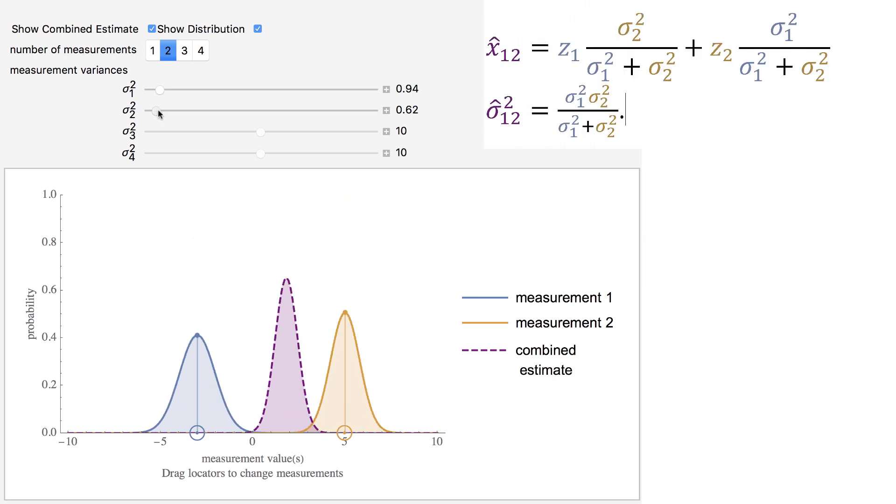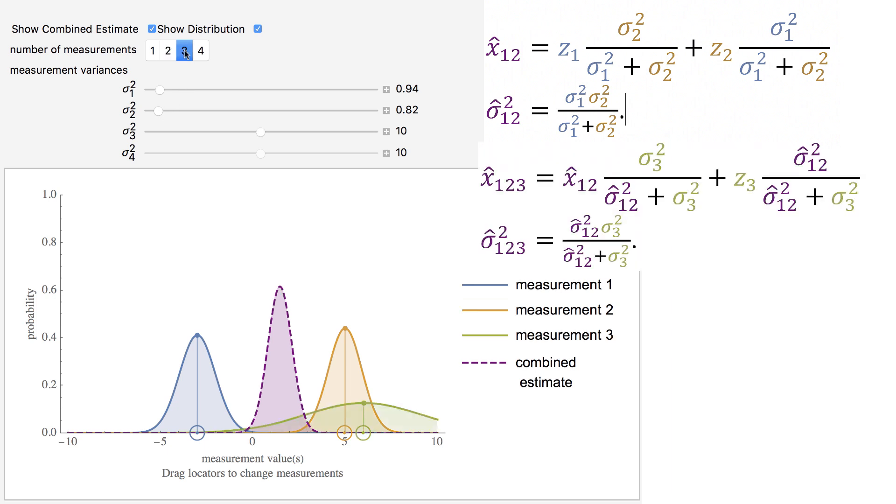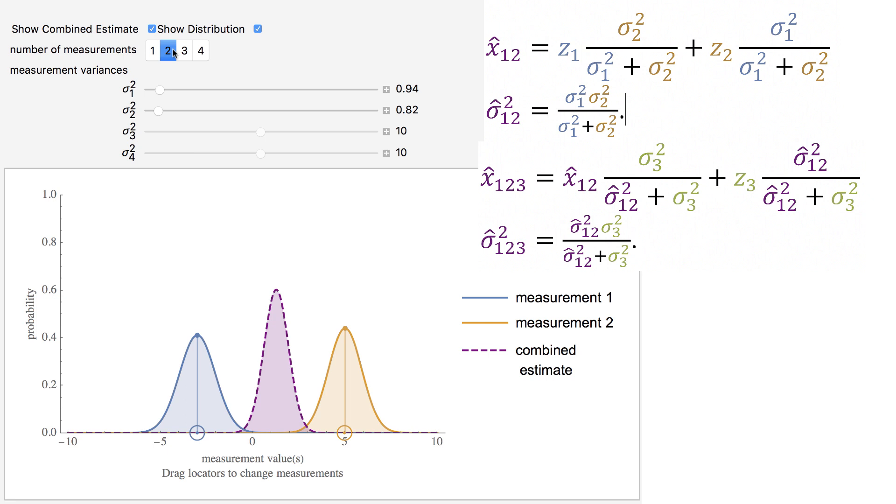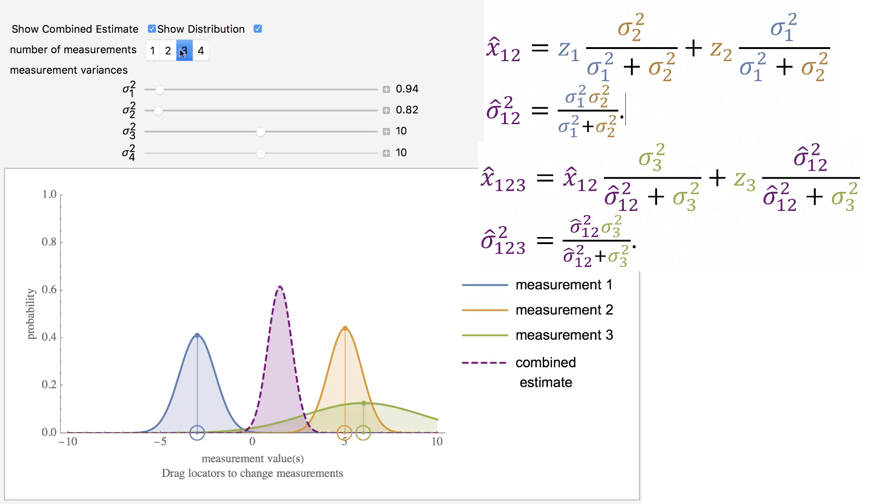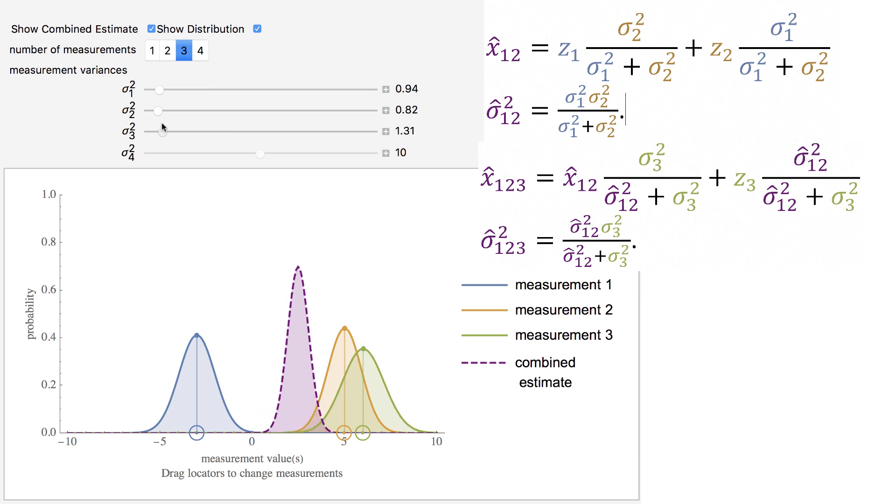A similar thing happens if we add additional measurements. Even if the additional measurement has low accuracy, you can see that as I add it, the combined measurement is moved slightly to the right. All the measurements have some impact on the combined estimate. I'll make that standard deviation smaller, so you can see that a little bit easier.